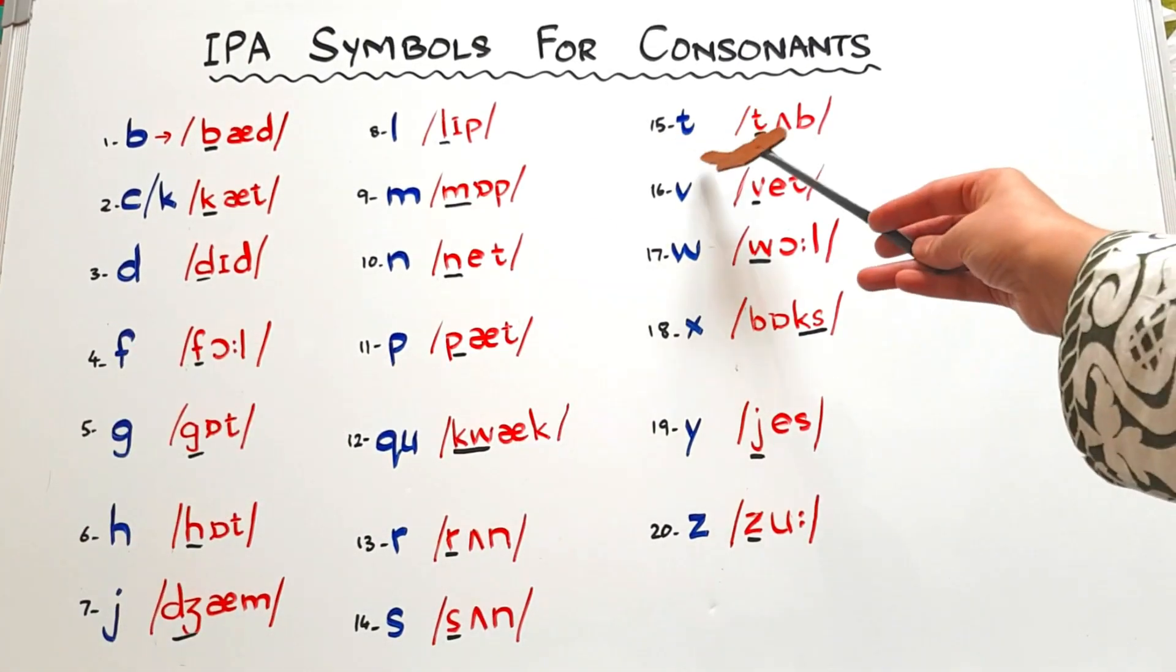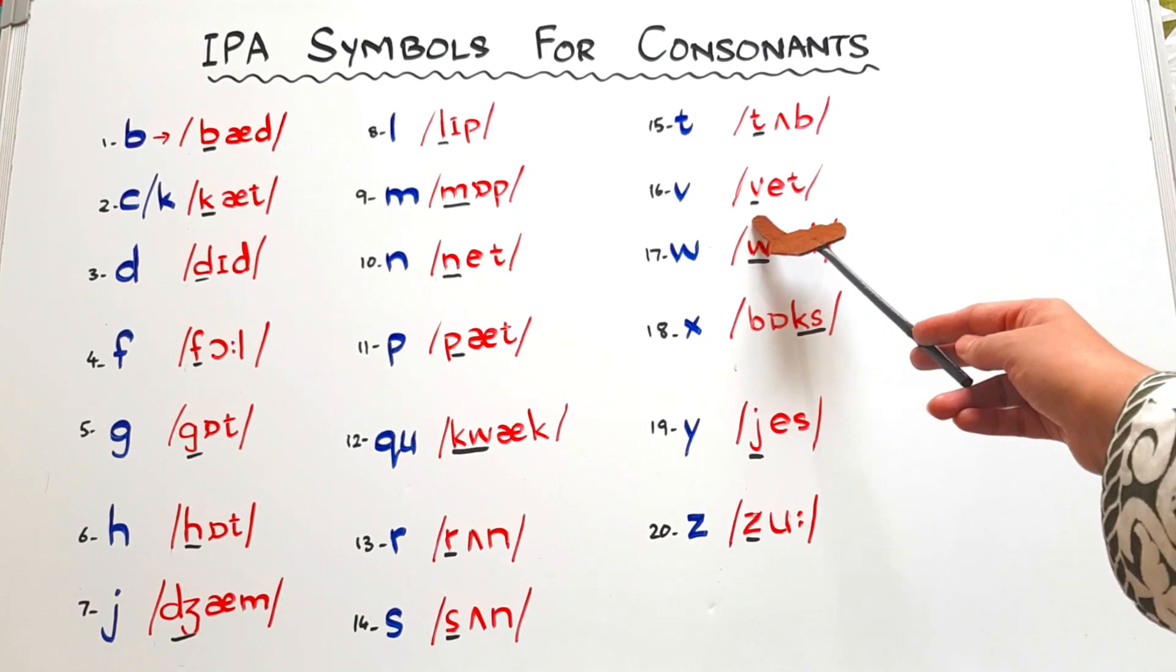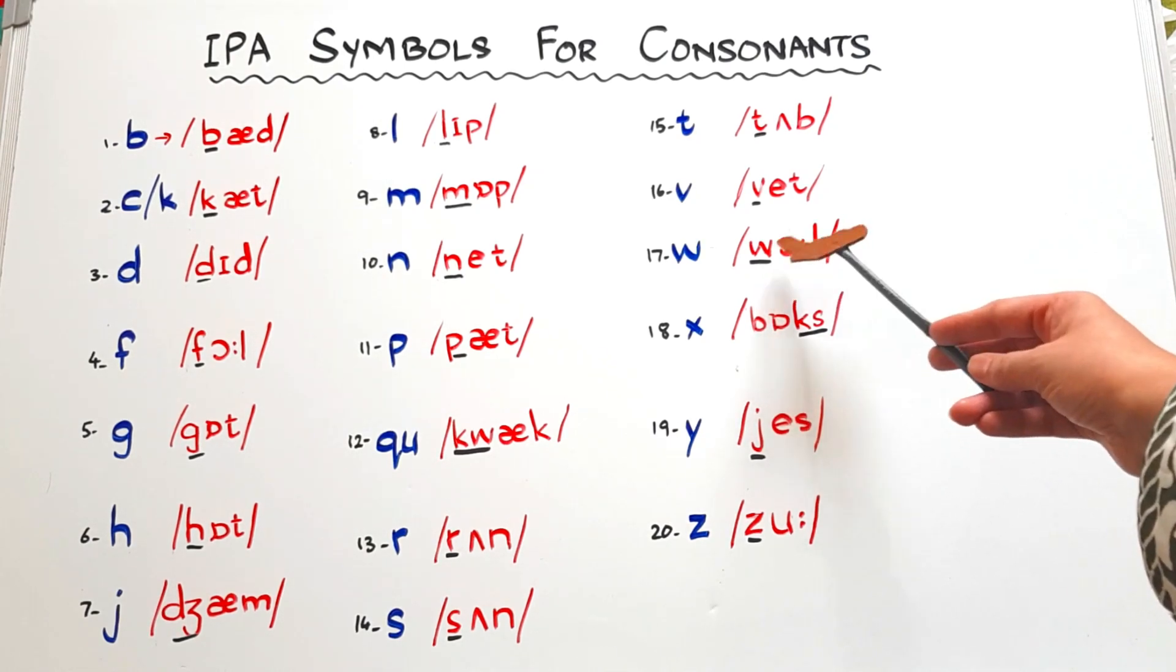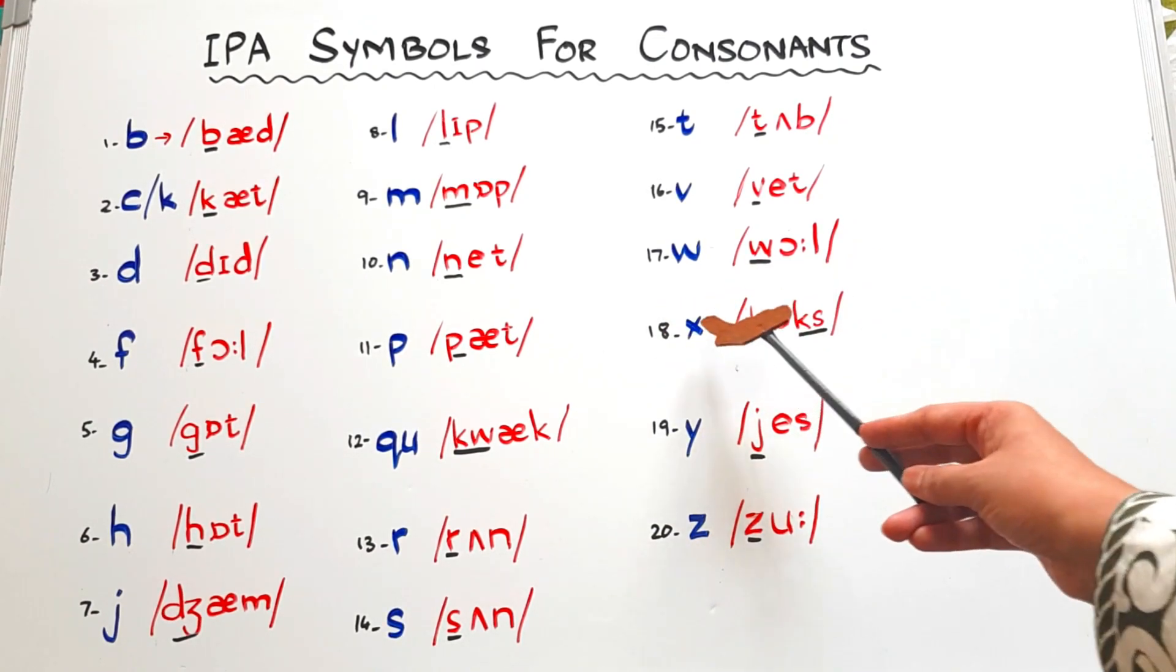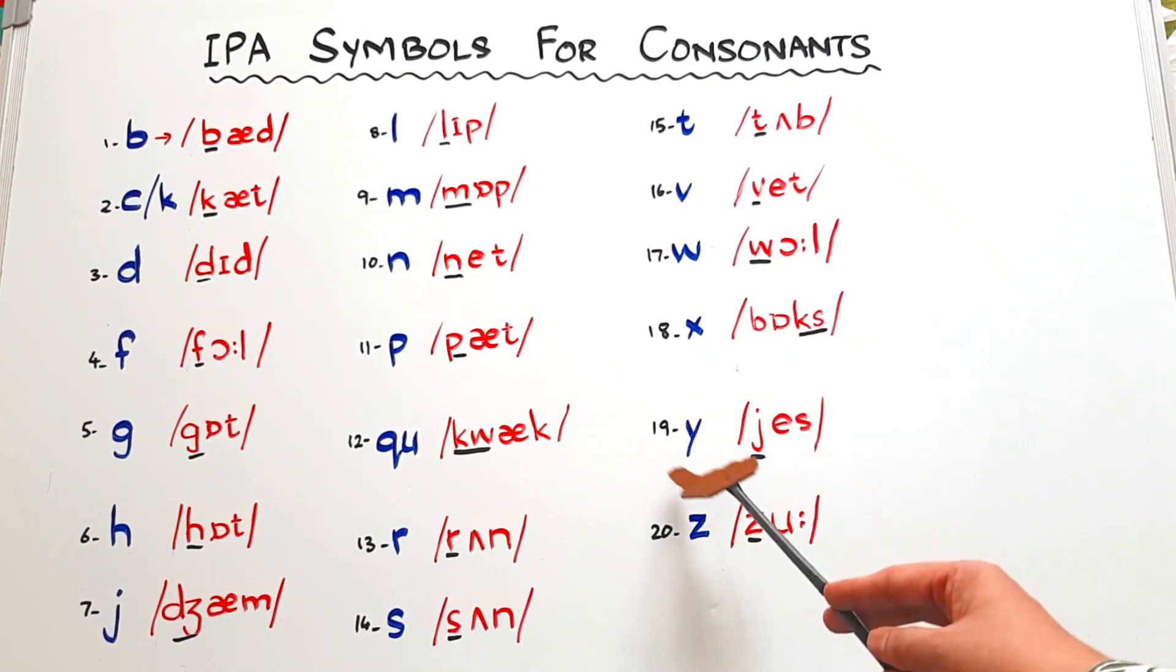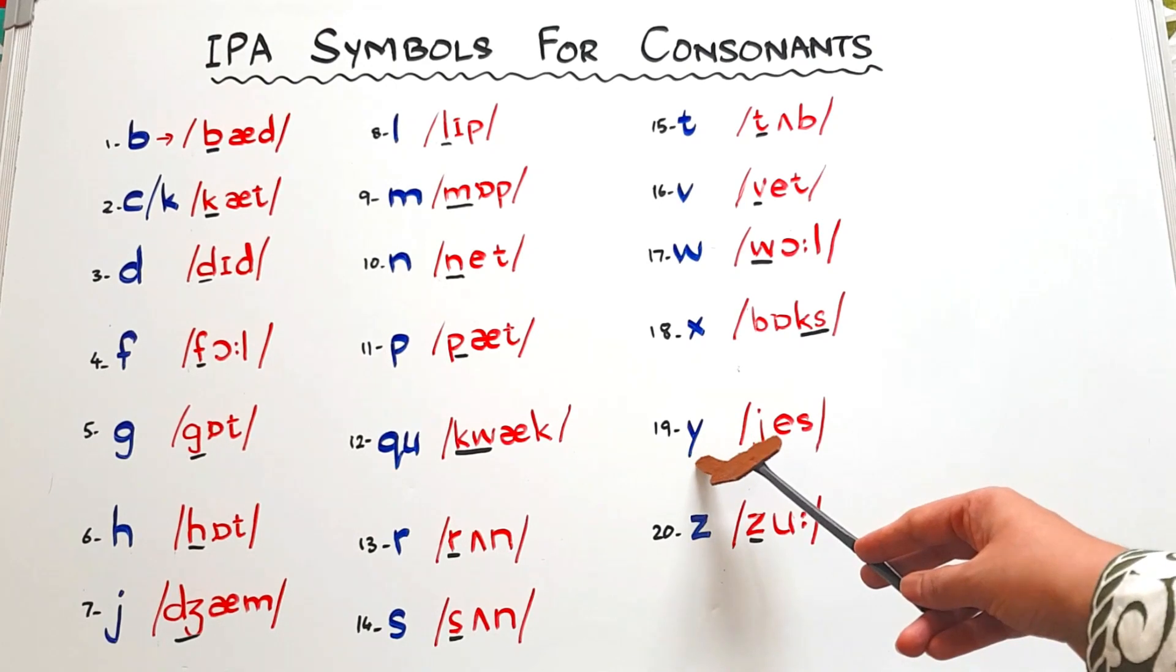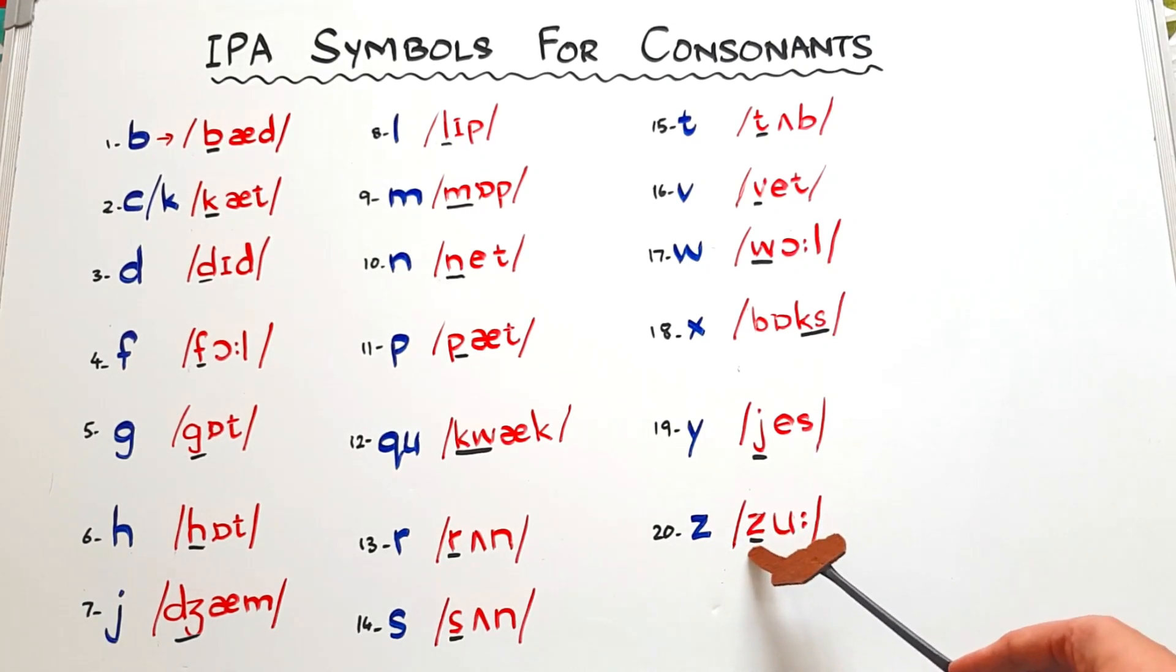Then we have letter T that has a symbol like this. T-A-P, 'tap'. V has the same symbol like the lowercase V. V-E-T, 'vet'. W has same symbol like the lowercase W. W-A-L-L, 'wall', this is the O sound. For X it is the mixture of two sounds - that is K and S - so we write it like this, K and S together. B-O-X, 'box'. For Y we write letter J here. J represents the Y sound, consonant sound of letter Y. Y-E-S, 'yes'. For Z we have Z here and this is the long U sound. Z-U, 'zoo'.